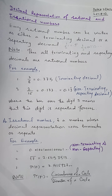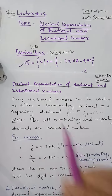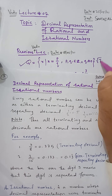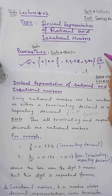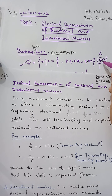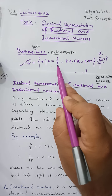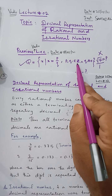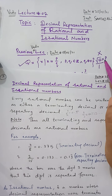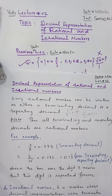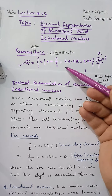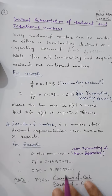Square root of 7: although √7 can be written as √7/1, it is not rational because p = √7 is not an integer. The definition requires p and q to both be integers. So √7 is not rational — and numbers which are not rational are irrational. Therefore √7 is an irrational number.